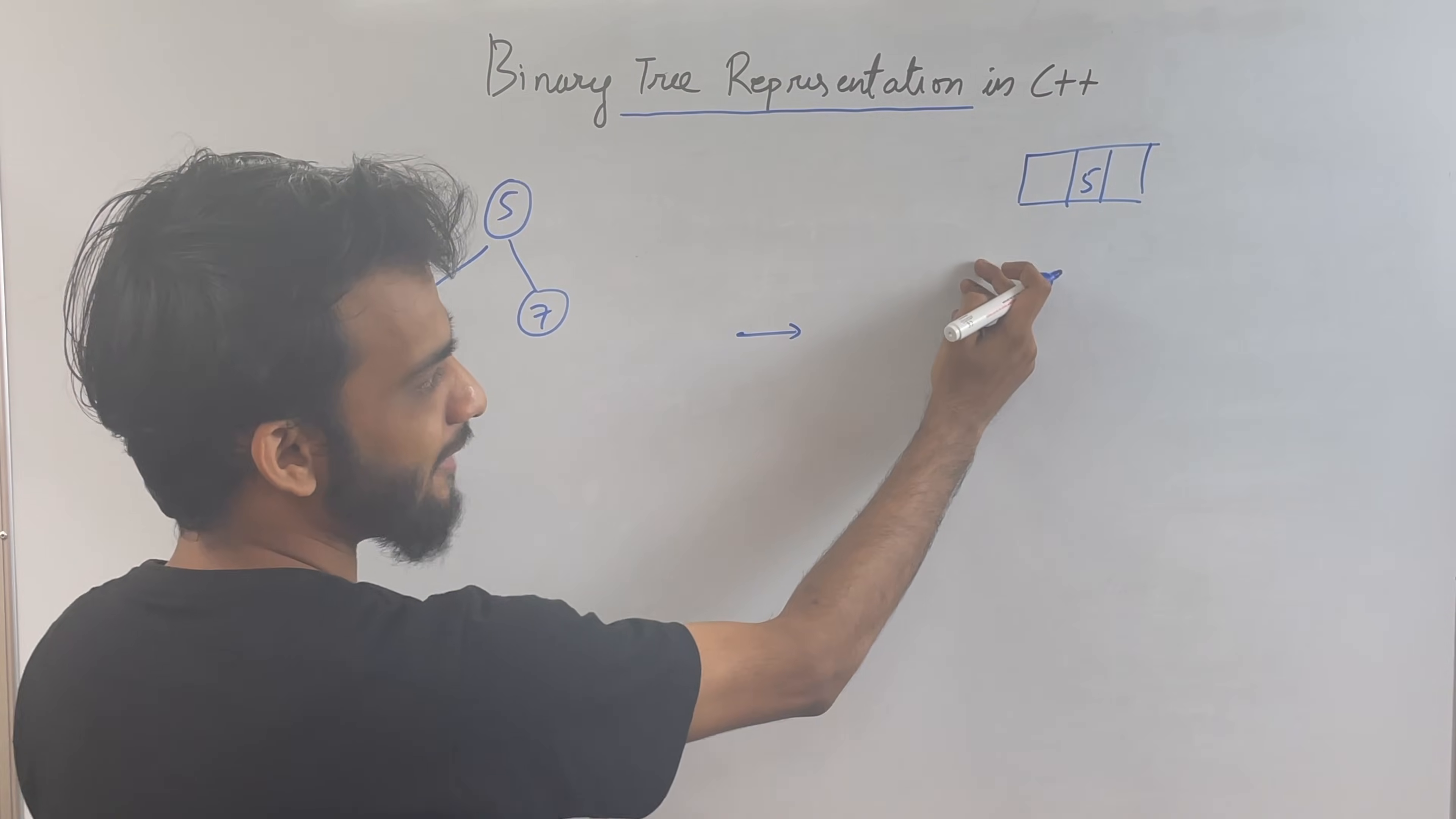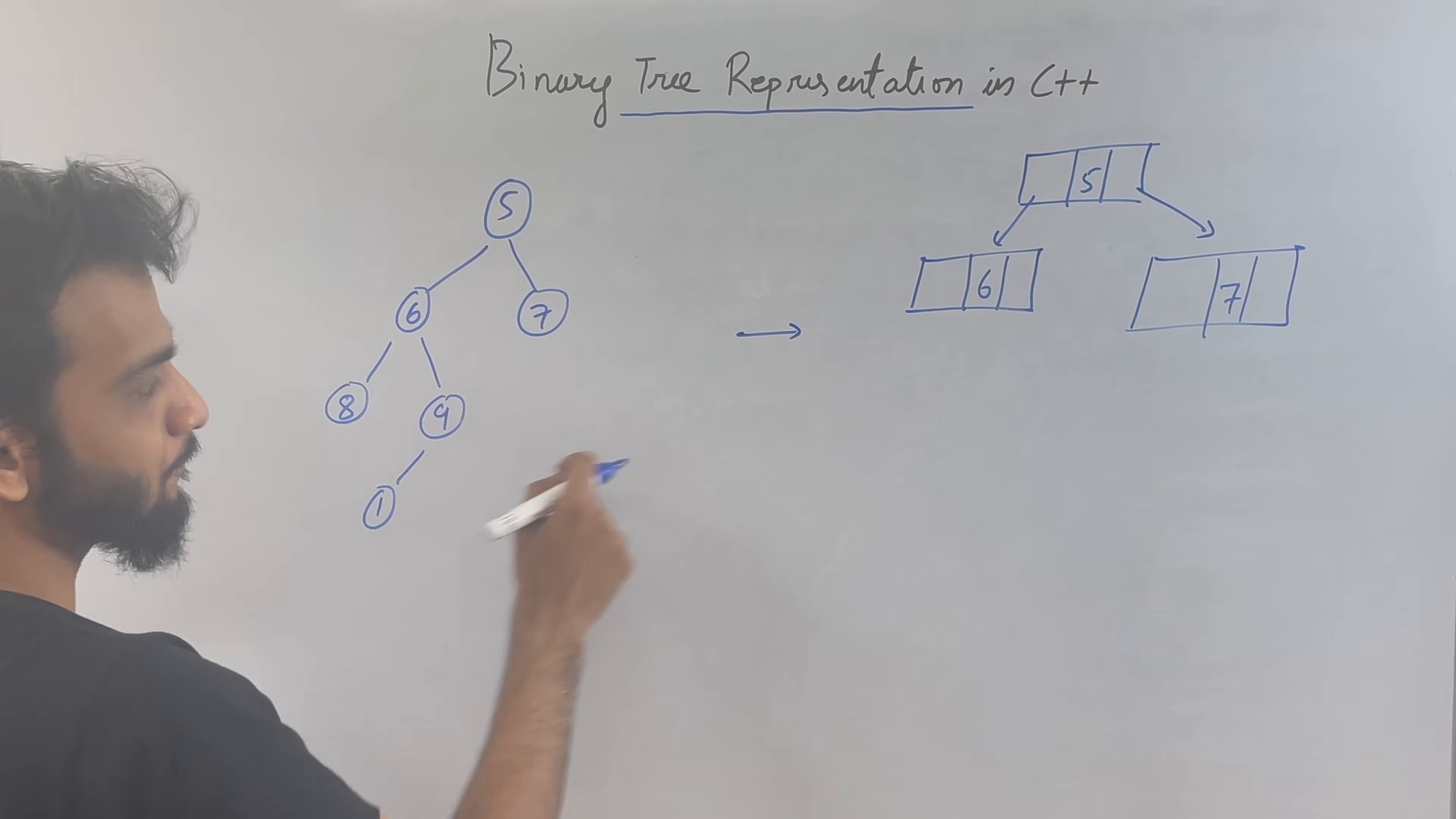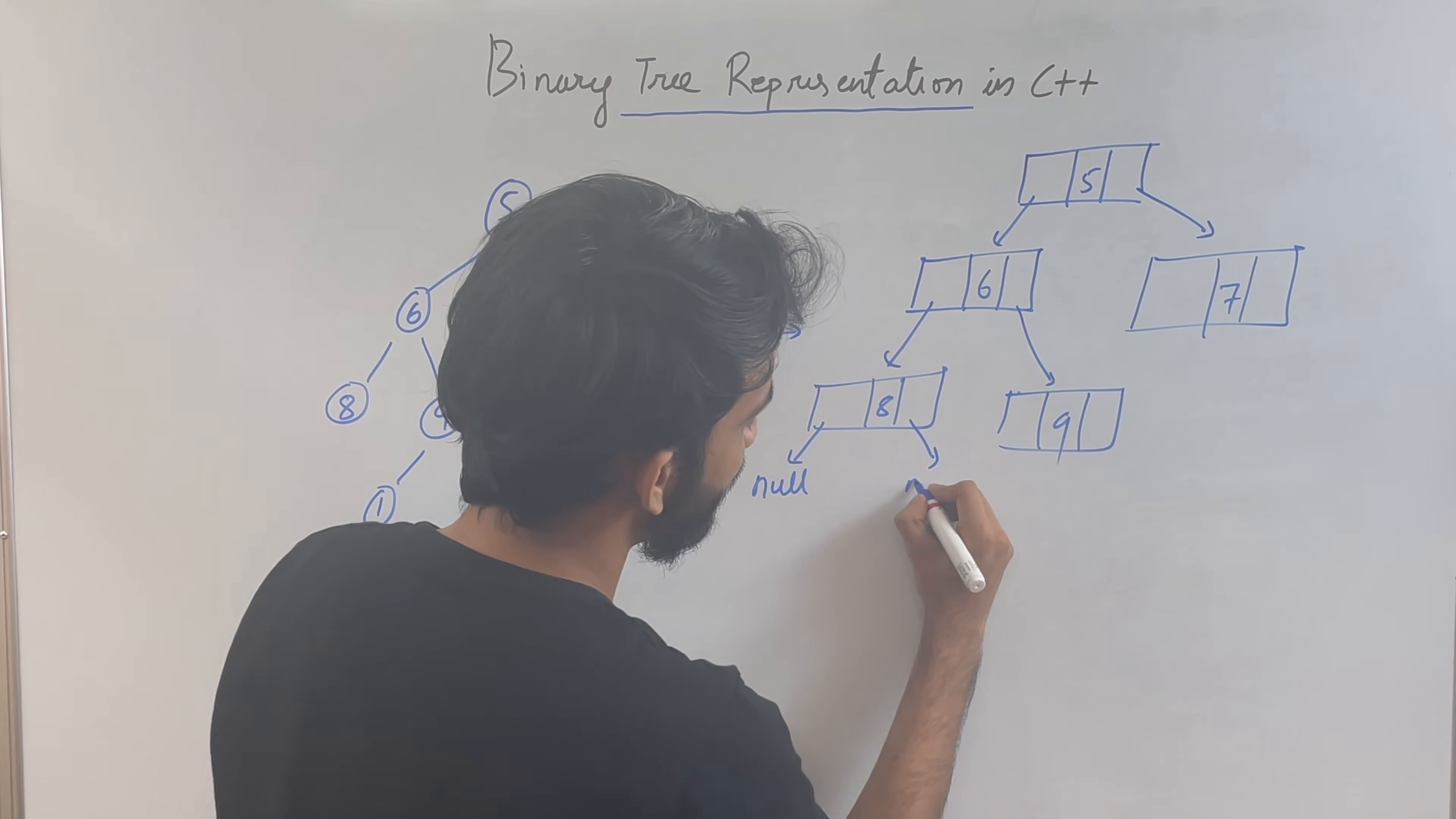And it has a pointer, a left pointer, and it has also a right pointer. It has a couple of pointers, left as well as right. The left pointer will be pointing to the left children, which is 6. Again, that 6 will be a node, correct. And the right will be 7. So this is how it will be pointing. Again, this 6 will be pointing to 8. The left guy will be pointing to 8, and the right guy will be pointing to 9. Now, this 8 doesn't have anyone on the left, doesn't have anyone on the right. So these guys will be pointing to null.